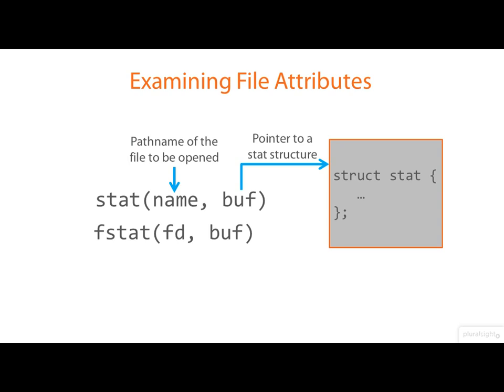STAT has a close relation called FSTAT. The main difference being that FSTAT takes an open file descriptor relating to the file that you want to examine, rather than the name. Both of these routines return 0 on success and minus 1 on failure.